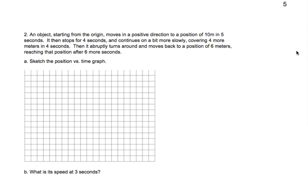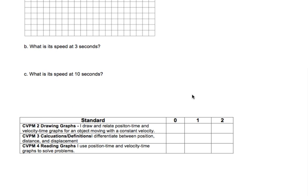So there are a number of standards we have. There's CVPM2, which is drawing. We have CVPM3, which is calculating definitions. And we have CVPM4, which is reading. And I'm going to abbreviate them as drawing, calculating, and reading. And I'll number them, too. So this is 2, 3, and 4.